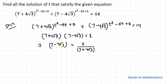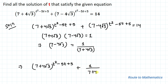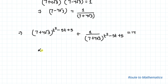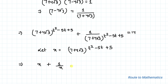Now let's substitute the value of (7 - 4√3) as 1/(7 + 4√3) into the given equation. What we get is: (7 + 4√3)^(t²-5t+5) + 1/(7 + 4√3)^(t²-5t+5) = 14. Now let's take x = (7 + 4√3)^(t²-5t+5), so our equation becomes x + 1/x = 14.